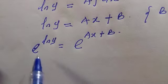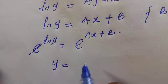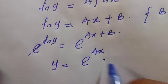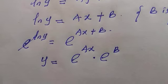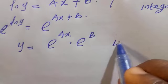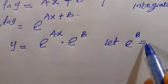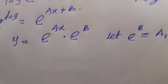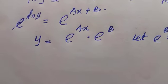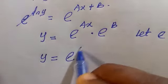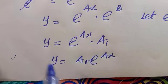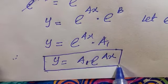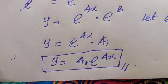We can separate this using the product rule of exponents: y equals e^(ax) · e^b. Since e^b is also a constant, we let it equal a₁. Substituting back, the final result is y equals a₁·e^(ax). This is the solution to the given differential equation.